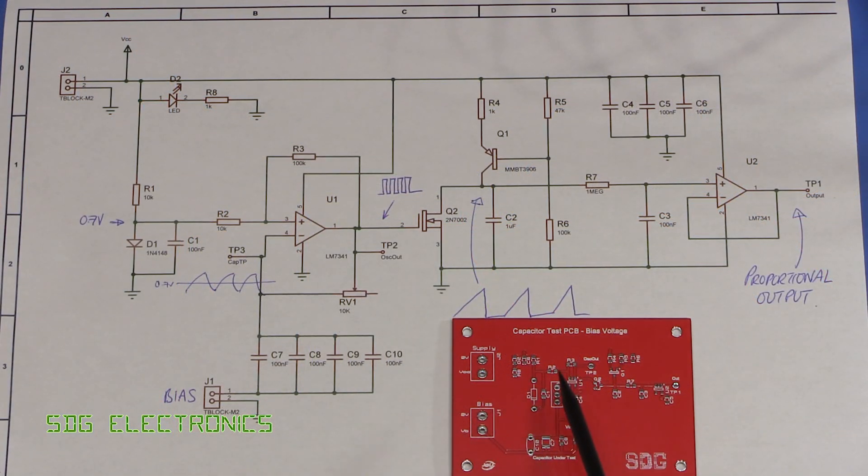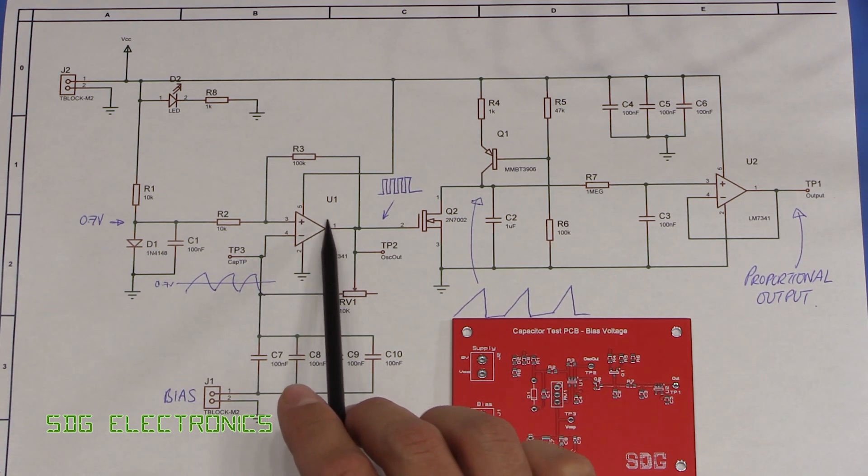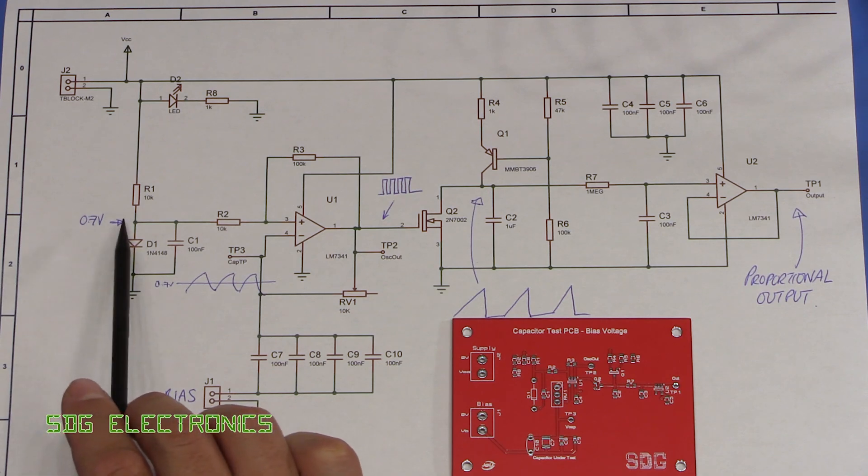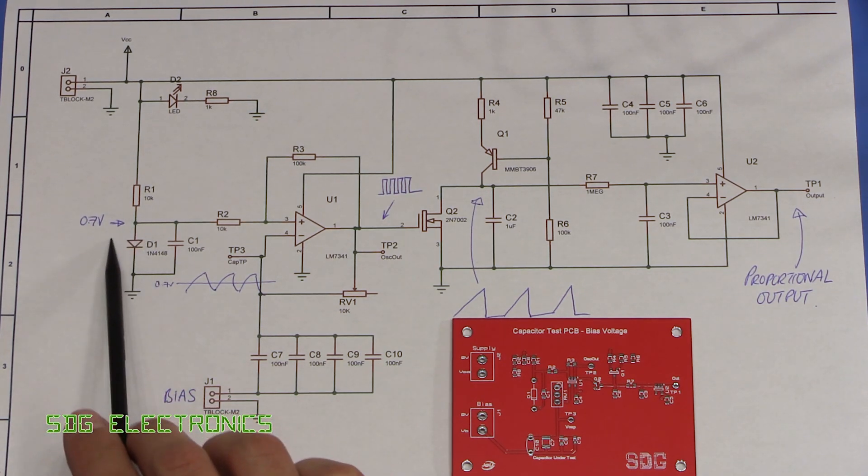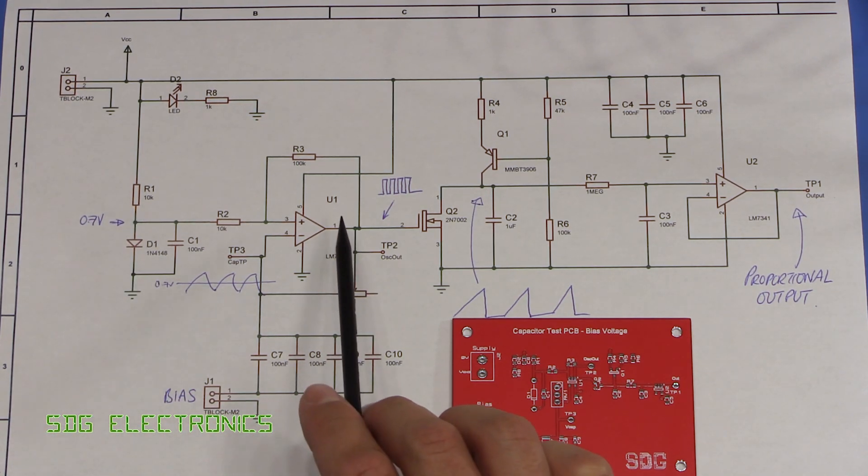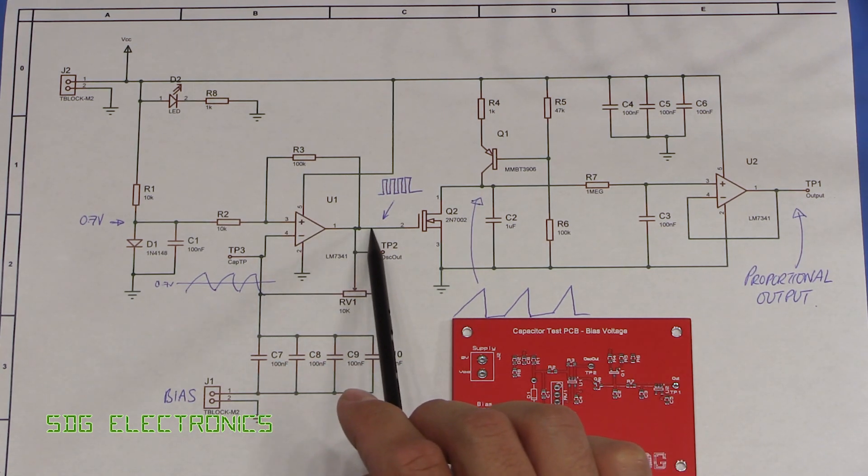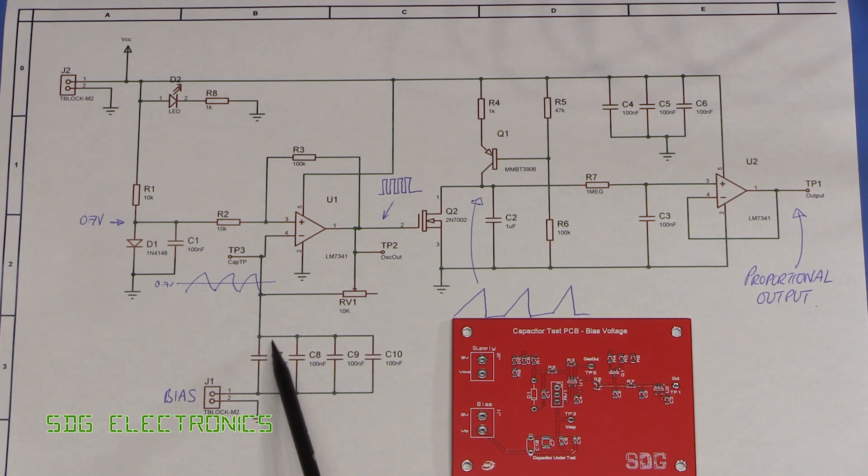Right, so here's our schematic for what I've implemented on the PCB. Basically we've got an RC oscillator based around an op-amp, so we set our reference voltage at 0.7 volts with this diode here, and then we've got an op-amp setup as a comparator.